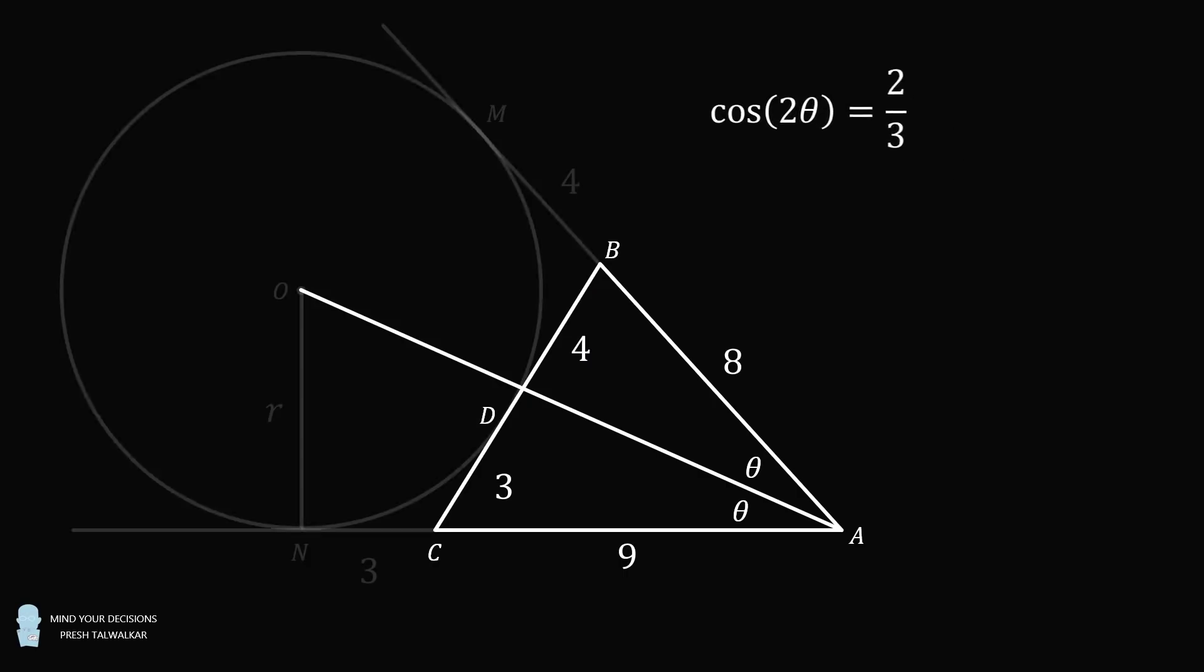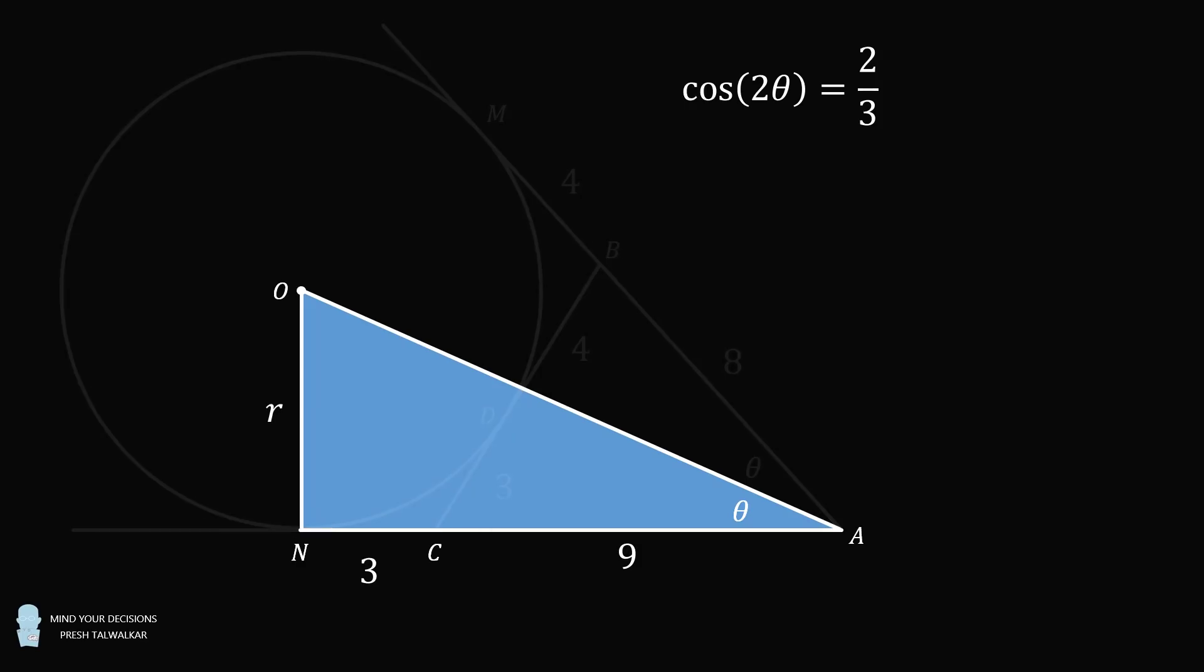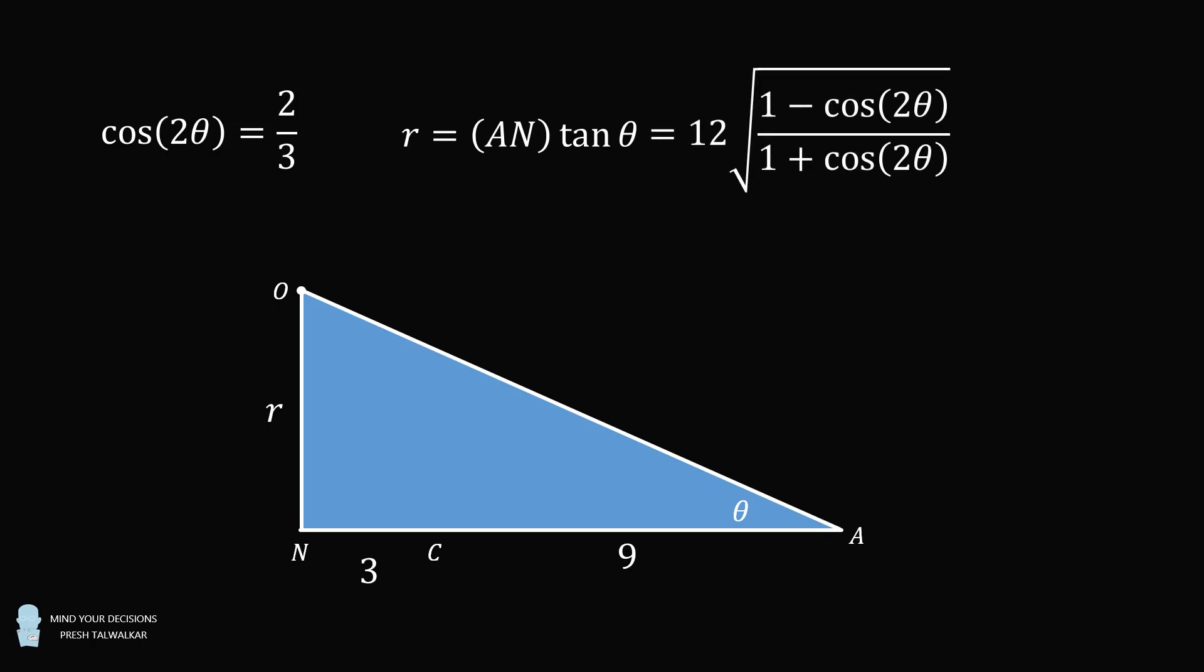We'll put that to the side for a second. And now, let's consider the right triangle ANO. In this right triangle, we have that R is equal to AN multiplied by the tangent of theta. We don't know the tangent of theta, so we'll use the tangent half angle formula, and we'll use the form that involves the cosine of 2 theta. We also know that the tangent here will be positive because we have a positive radius, so we just take the positive square root.